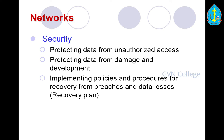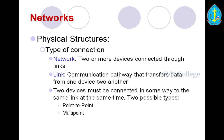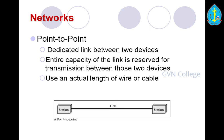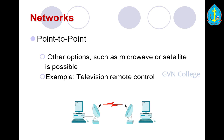The next important concept is the physical structure of a network — how the type of network can be connected. A network has two or more devices connected through a link. A link is a communication path that transfers data from one device to another. Two possible types are used: point-to-point communication and multipoint communication. Point-to-point communication uses a dedicated link between two devices where the entire capacity of the link is used for transmission between those two devices, using an actual wire or cable — or other options such as microwave or satellite.